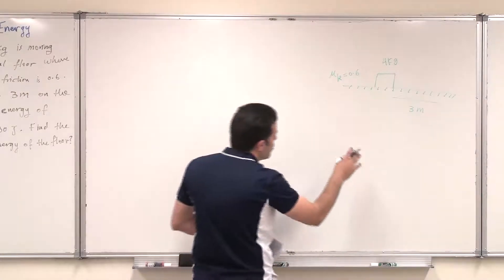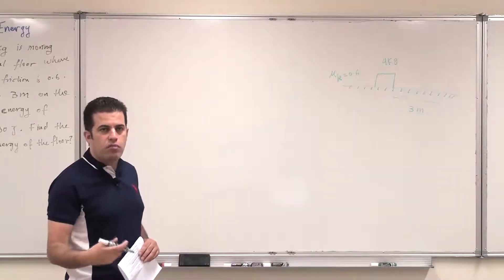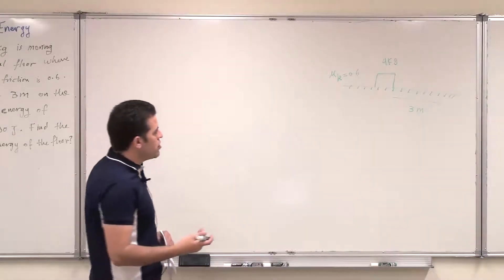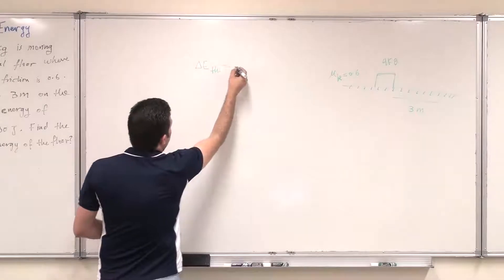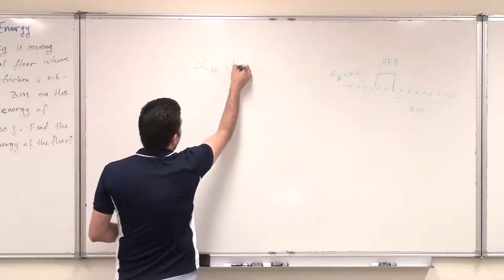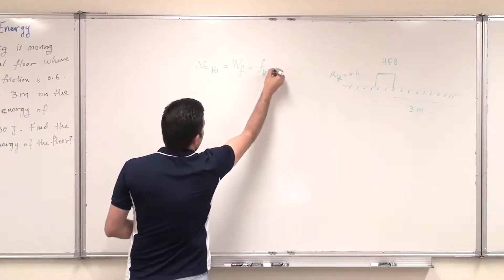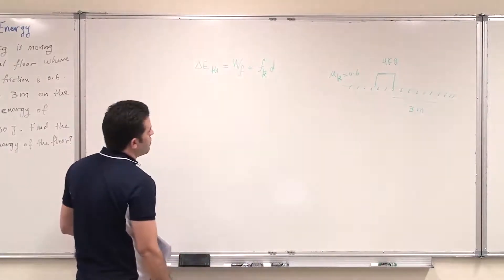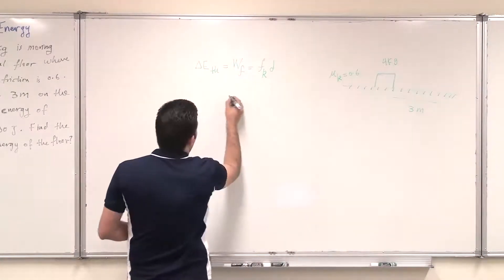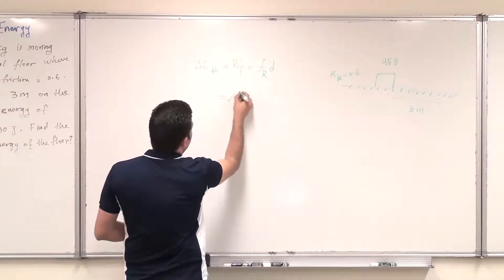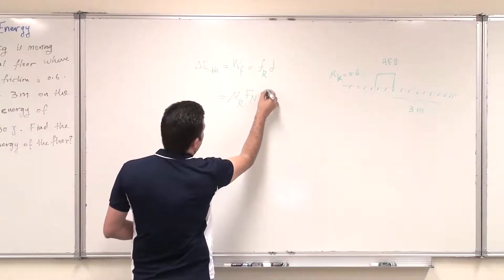While it's sliding, due to the force of friction, there will be an increase in thermal energy. This increase in thermal energy, delta E thermal, will be equal to the work done by the force of friction, which is Fk multiplied by the distance of slide D. And Fk equals mu_k, the coefficient of kinetic friction, times the normal force, multiplied by D.